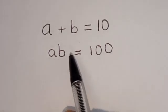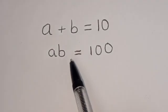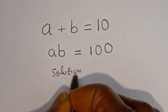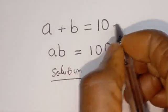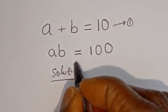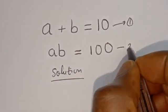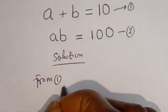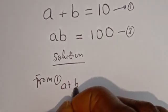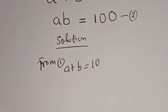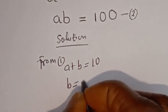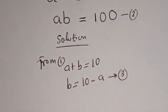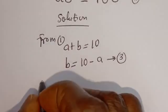How to solve for a and b in this equation: a plus b is equal to 10 — let's call this equation 1. a times b is equal to 100 — let's call this equation 2. From equation 1, let's make b the subject of the formula: b is equal to 10 minus a — let's call this equation 3.